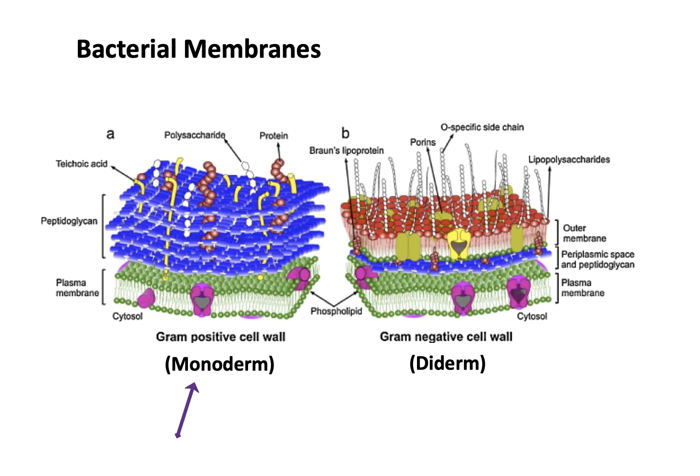Gram-positive bacteria are called monoderms and gram-negative are called diderms. One hypothesis states that diderms were formed by an endosymbiotic event between two monoderms, giving you two membranes rather than just one — but that's only one of the hypotheses for the origination of diderms.